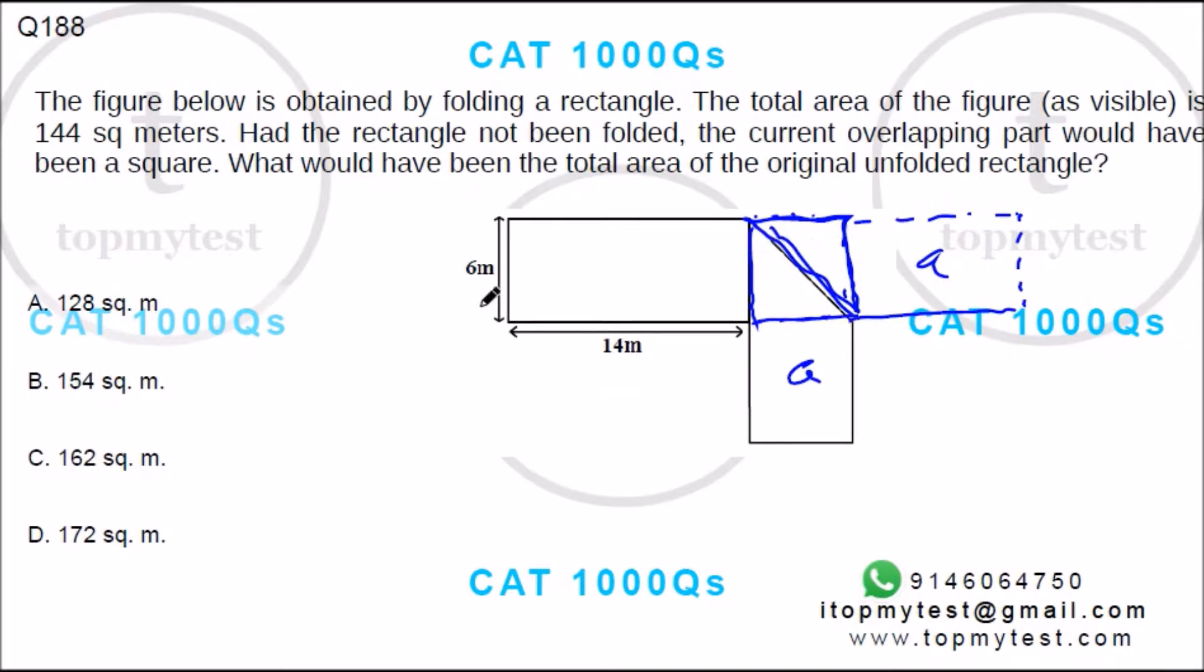So this is a square, we know that. Square of side 6, so half an area is lost. Area of full square will be 36. Half of the square will be 18, so the area will increase by 18 units. So 144 plus 18, that is 162. Option C is your correct choice. Pretty simple question.